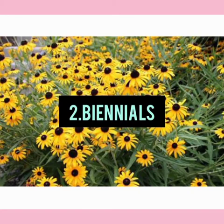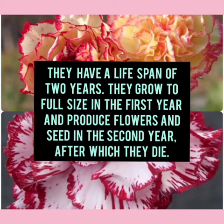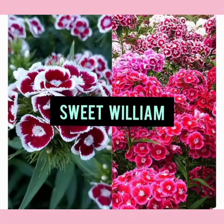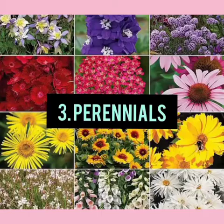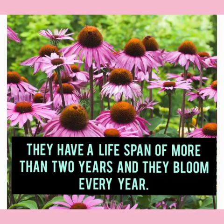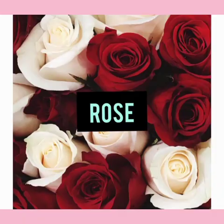Second, biennials. They have a lifespan of two years. They grow to full size in the first year and produce flowers and seeds in the second year, after which they die. Carnation, hollyhock, and sweet william are biennials. Third, perennials. They have a lifespan of more than two years and bloom every year. Lily, canna, and rose are perennials.